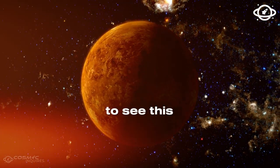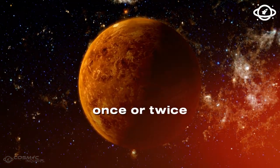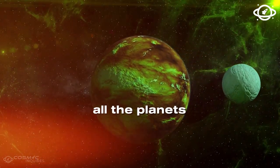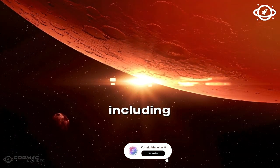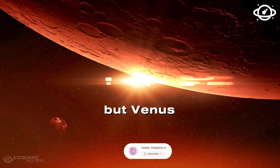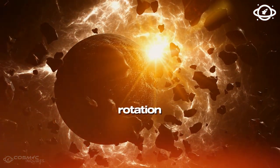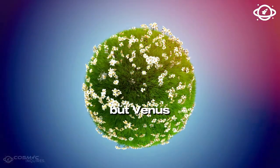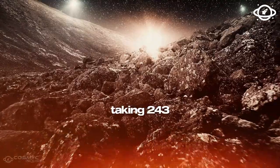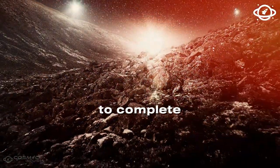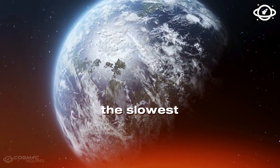All the planets orbit the Sun in a counterclockwise direction, including Venus. But Venus is unique in that it rotates clockwise, meaning it has a retrograde rotation. Not only that, but Venus rotates incredibly slowly, taking 243 Earth days to complete one rotation, making it the slowest of any planet.